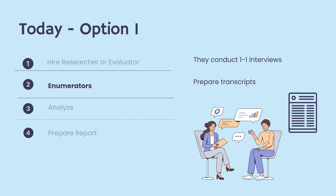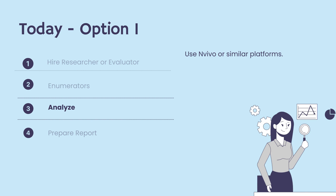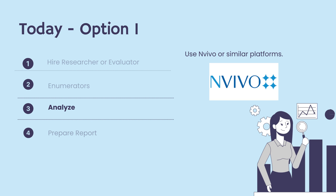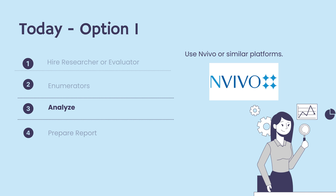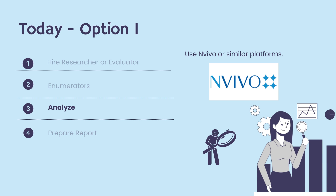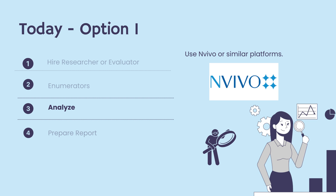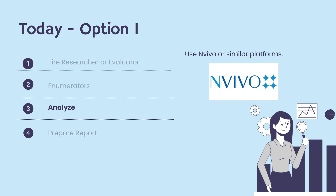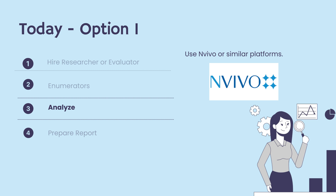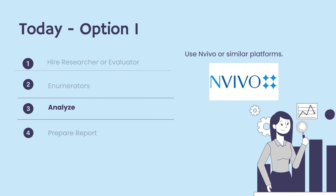The subsequent analysis phase is where the real challenge lies. Researchers use advanced tools like NVivo to look at the textual data, identifying patterns and themes that are not immediately apparent. This stage requires technical proficiency with the software and a deeply analytical mindset to interpret the data meaningfully.